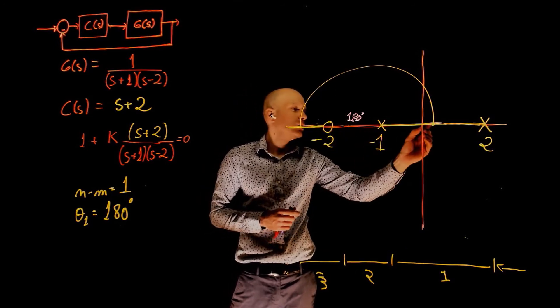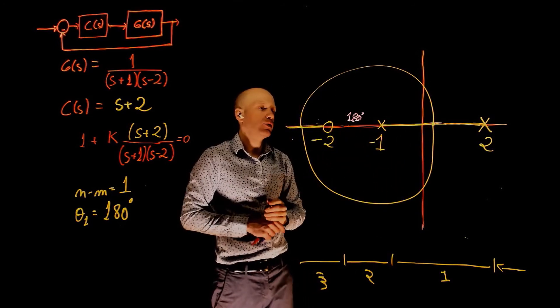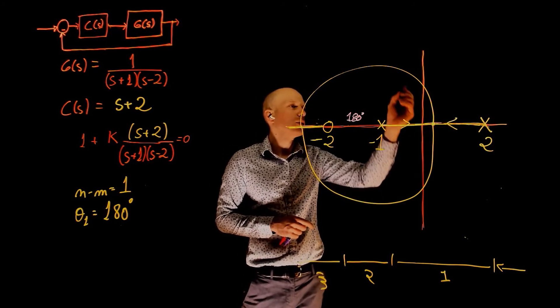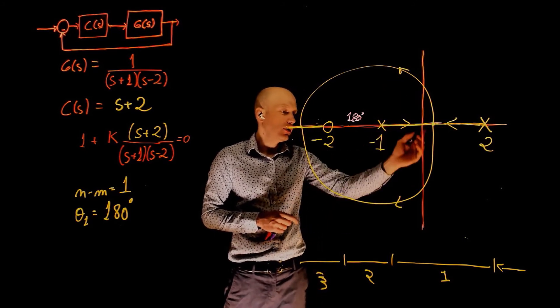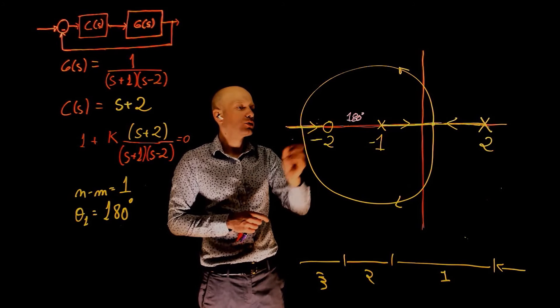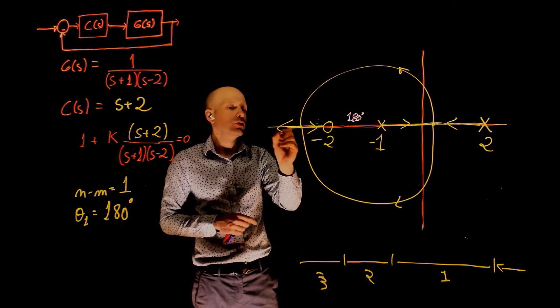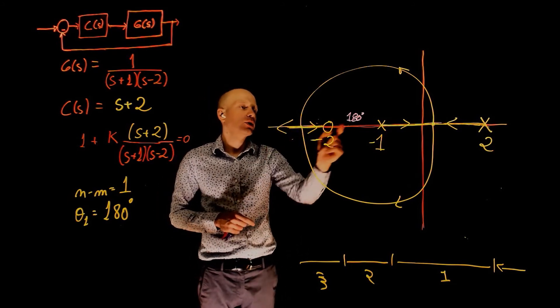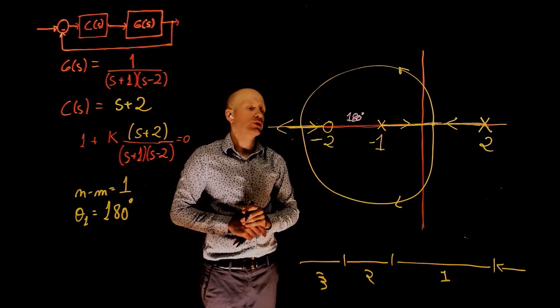So the poles here will come together somewhere. They'll jump to the negative side of the real axis. They'll come together there. One goes up. One goes down. They travel this way. One goes to the zero. And one goes to negative infinity. That's the one that uses the asymptote at 180 degrees.